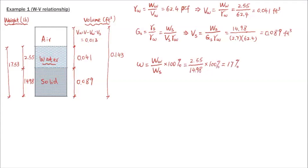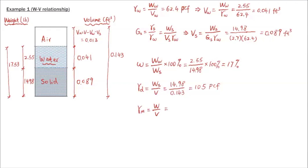The dry unit weight, gamma d, is weight of solids over total volume, which gives 105 PCF, or pounds per cubic foot. The moist unit weight is total weight over total volume — 17.53 divided by 0.143 — which equals 123 PCF.